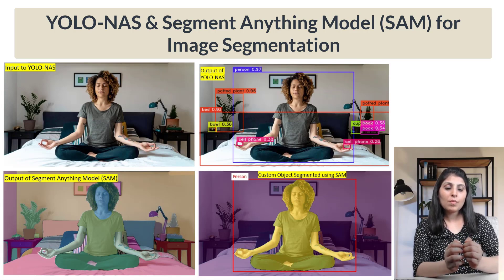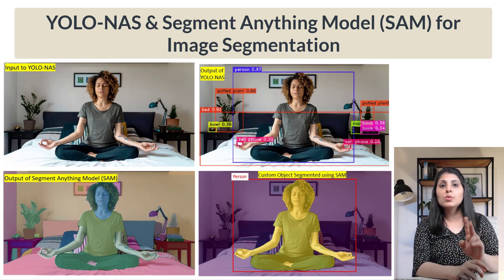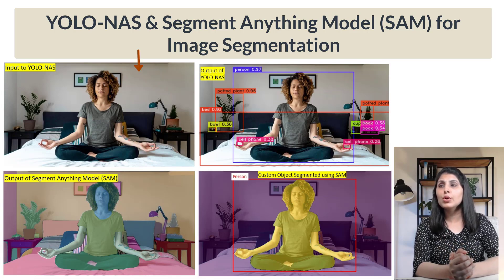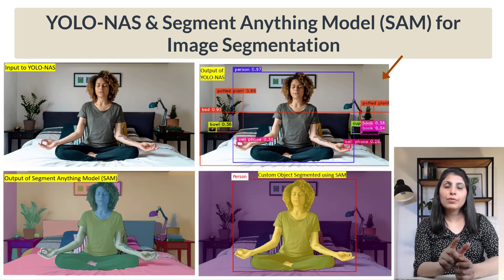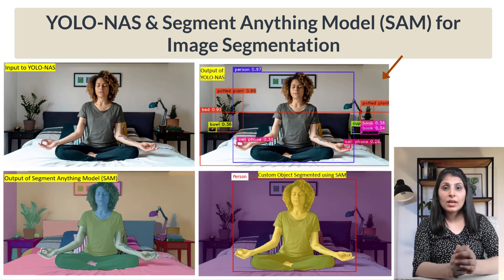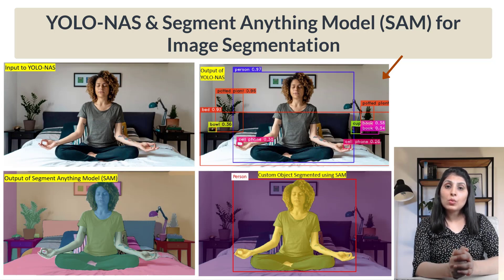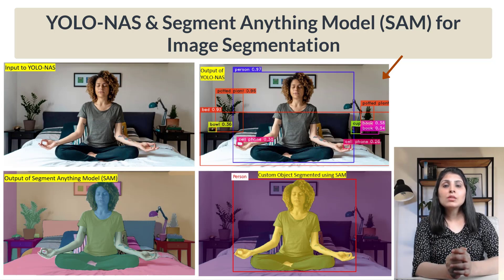We will see how we can perform image segmentation by using these two models together. The very first image is the input to YOLO-NAS, and the second image is the output of YOLO-NAS. Since YOLO-NAS is an object detection model, you can see we are getting bounding boxes with their confidence scores and class labels.